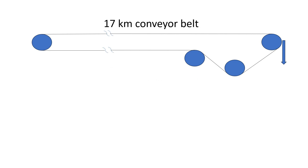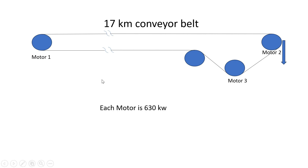We have a 17 km conveyor belt and that conveyor belt is run by three motors — one is at the tail end and another two are at the head end. I have drawn that conveyor belt simply, but there is more equipment like take-up pulley, wind system, and tensioning system. Each motor is 630 kW, with material loaded at the tail and discharged at the head.